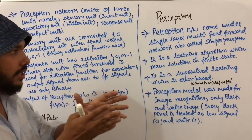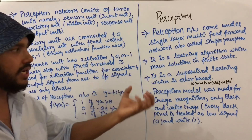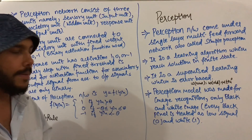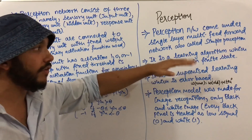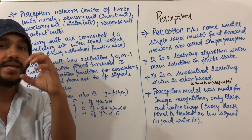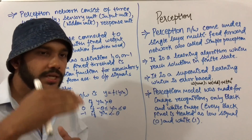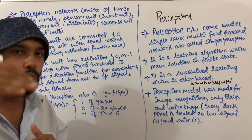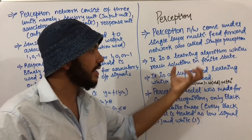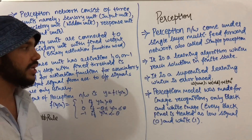Perceptron is a learning algorithm which reaches a solution in finite steps — it will not take infinite steps. Since it terminates in finite steps, the answer will be exact, not approximate, and will not tend towards an asymptotic notation.